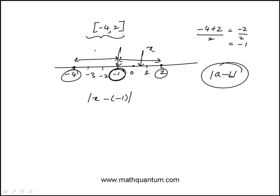So it doesn't matter which side the x is, its distance from the midpoint has to be less than or equal to 3, because it has to be three units or less on both sides. So this can then be written as absolute value of x plus 1 is less than or equal to 3.